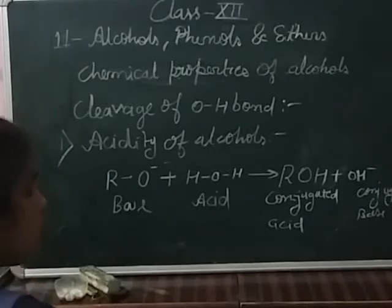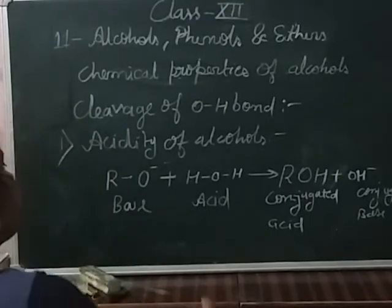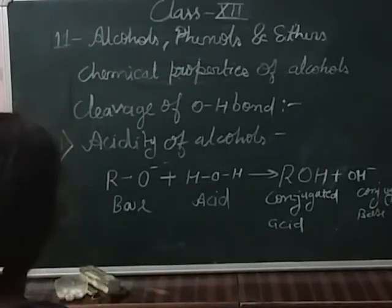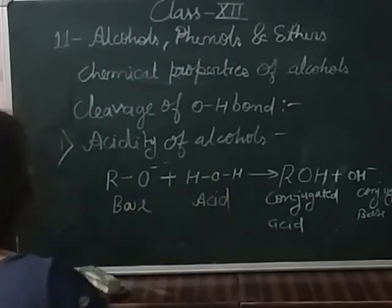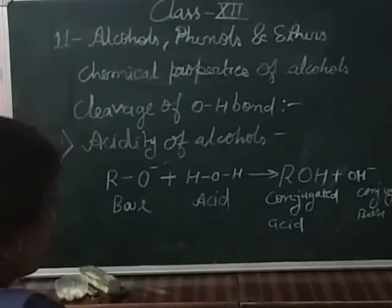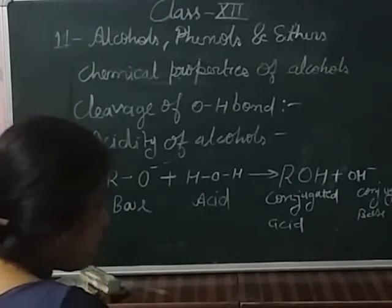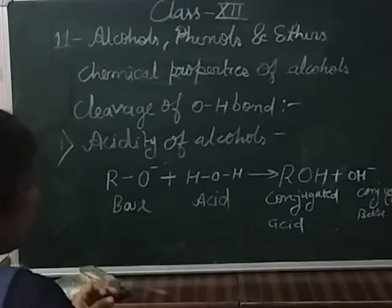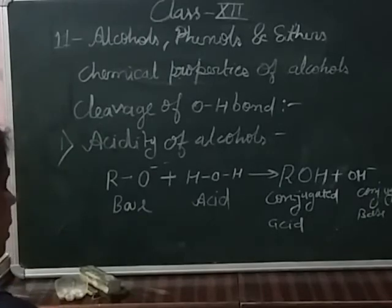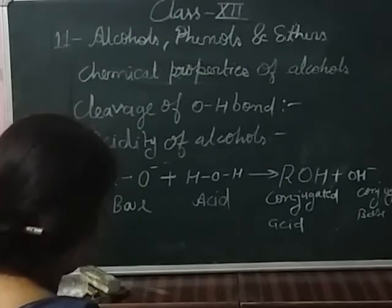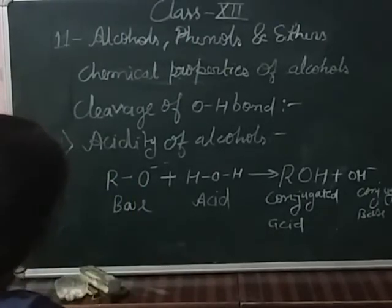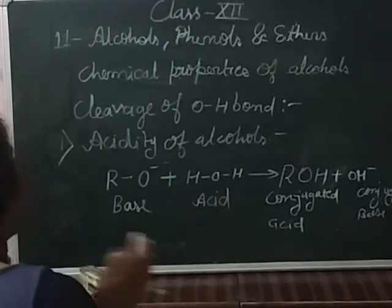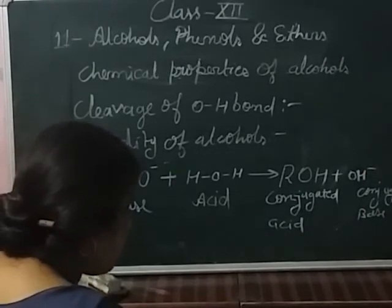Water is a good proton donor, that's why it is acidic in nature. The alkoxide ion is a better proton acceptor because it combines with the donated proton and forms the conjugated acid ROH. The alkoxide ion is a strong base. Similarly, sodium ethoxide is a stronger base than sodium hydroxide. The alkoxide acts as a Brønsted base because it is a good proton acceptor — it has an unshared electron pair on the oxygen.